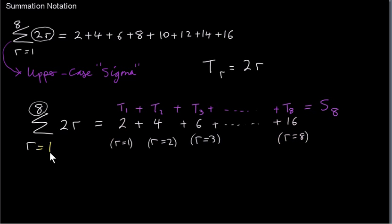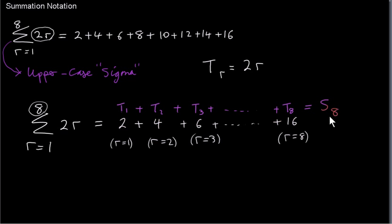Since we're summing from r equals 1 up to r equals 8, we can write our series as t1 plus t2 plus t3 and so on up to t8. Of course, t1 plus t2 up through t8 is also written as S8, the sum of the first eight terms.